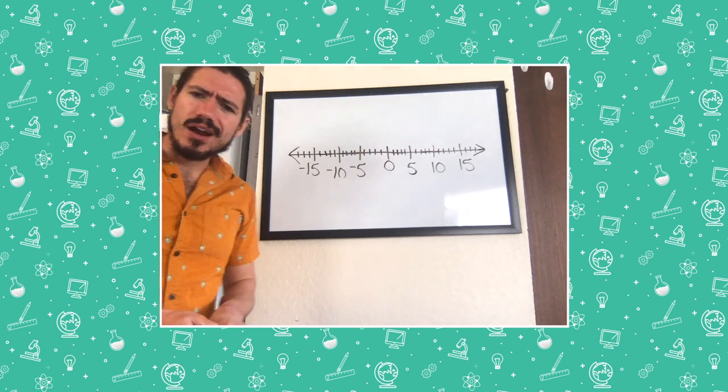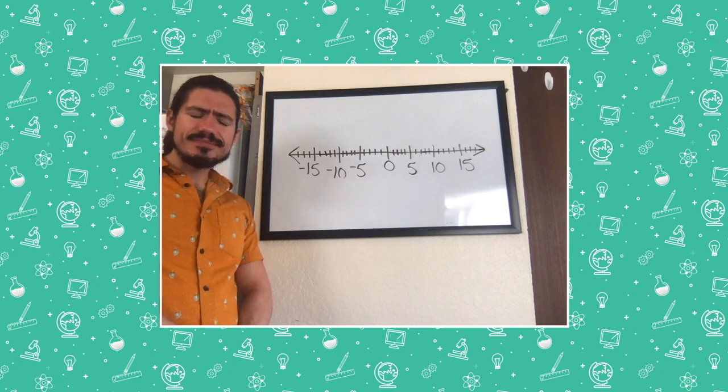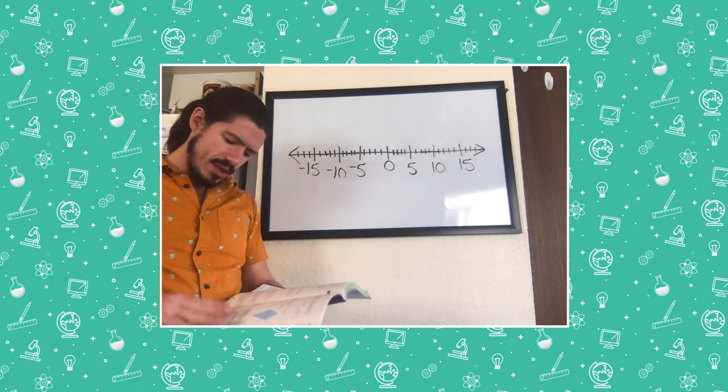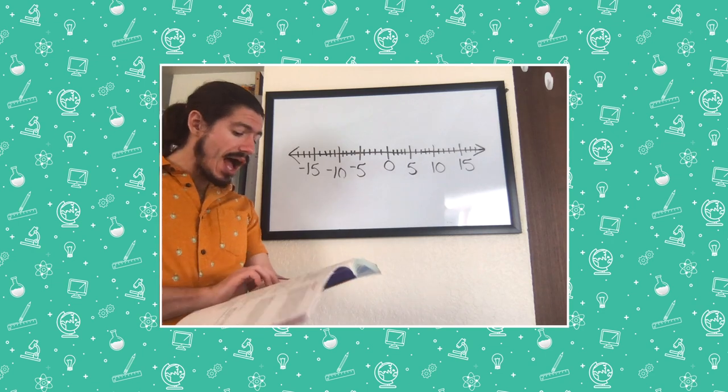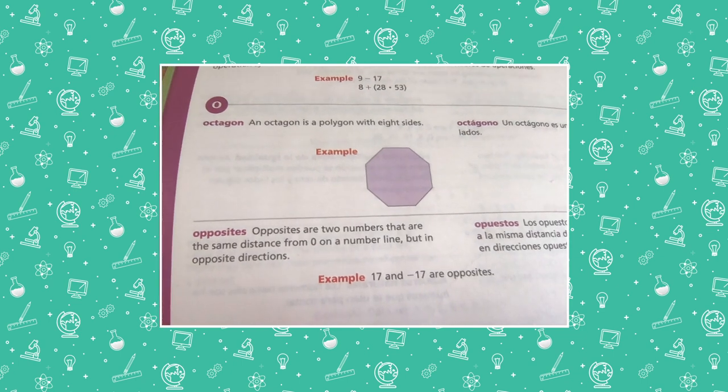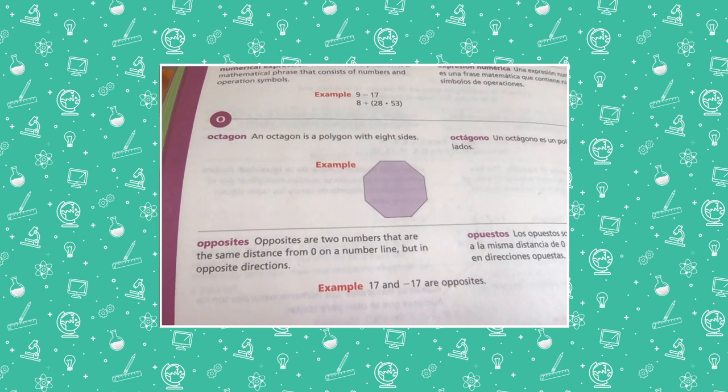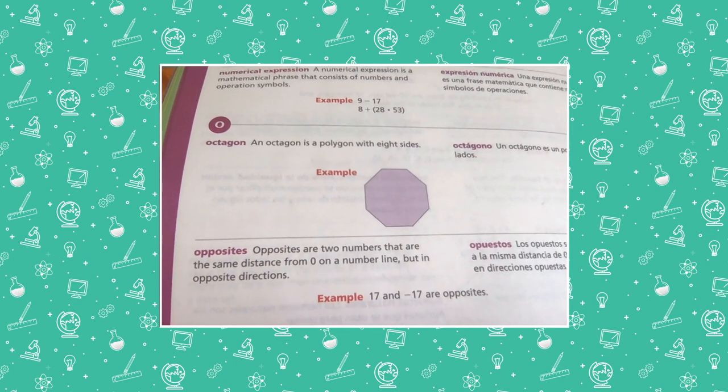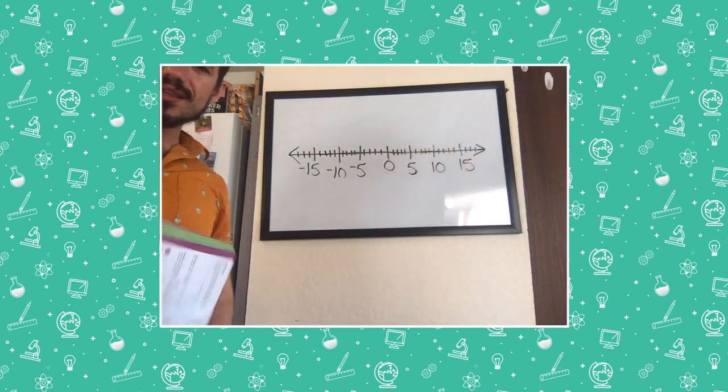Now, I just saw another word in there. Opposites. Hmm, what are opposites? Is it like hot and cold? Day and night? I don't think it's quite the same for numbers. So, let's have a look. Opposites, opposites, opposites. Ah, there we go. Opposites are two numbers that are the same distance from zero on a number line and in opposite directions. So, for example, 17 and negative 17 are opposites. Let's see how that works.